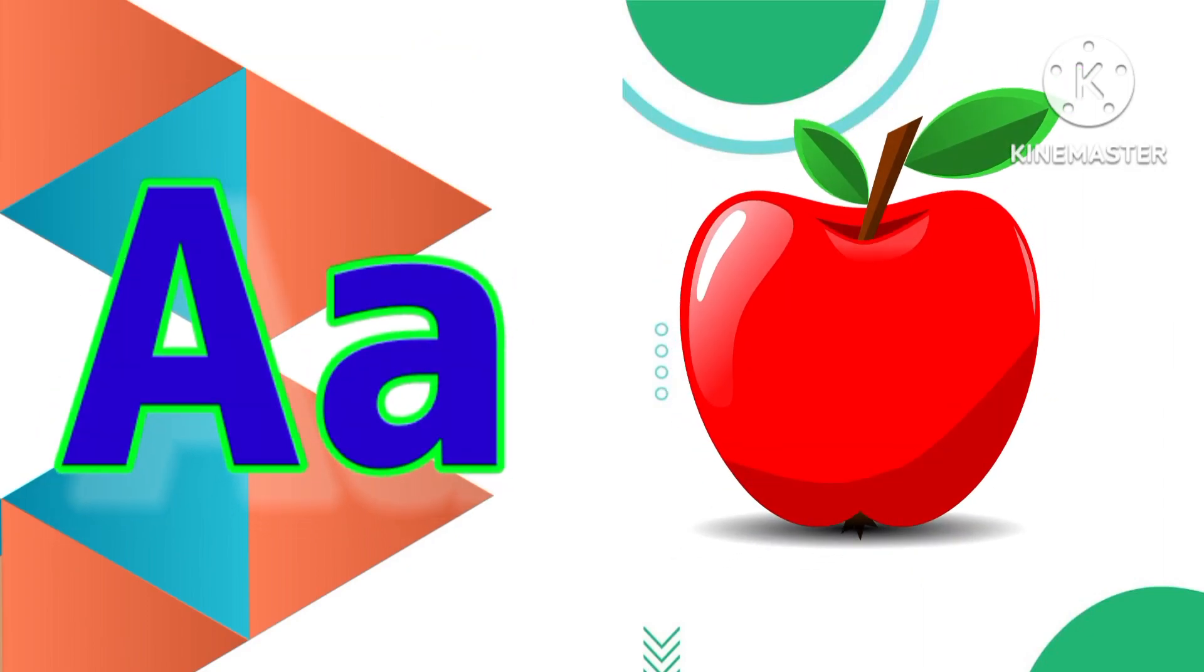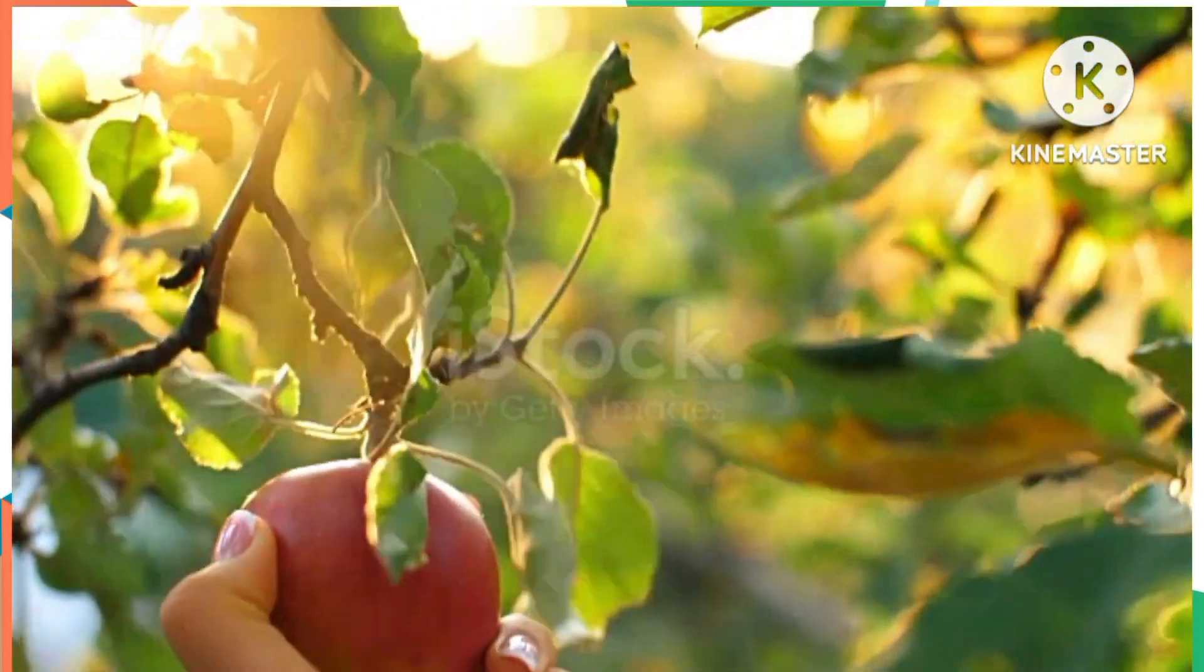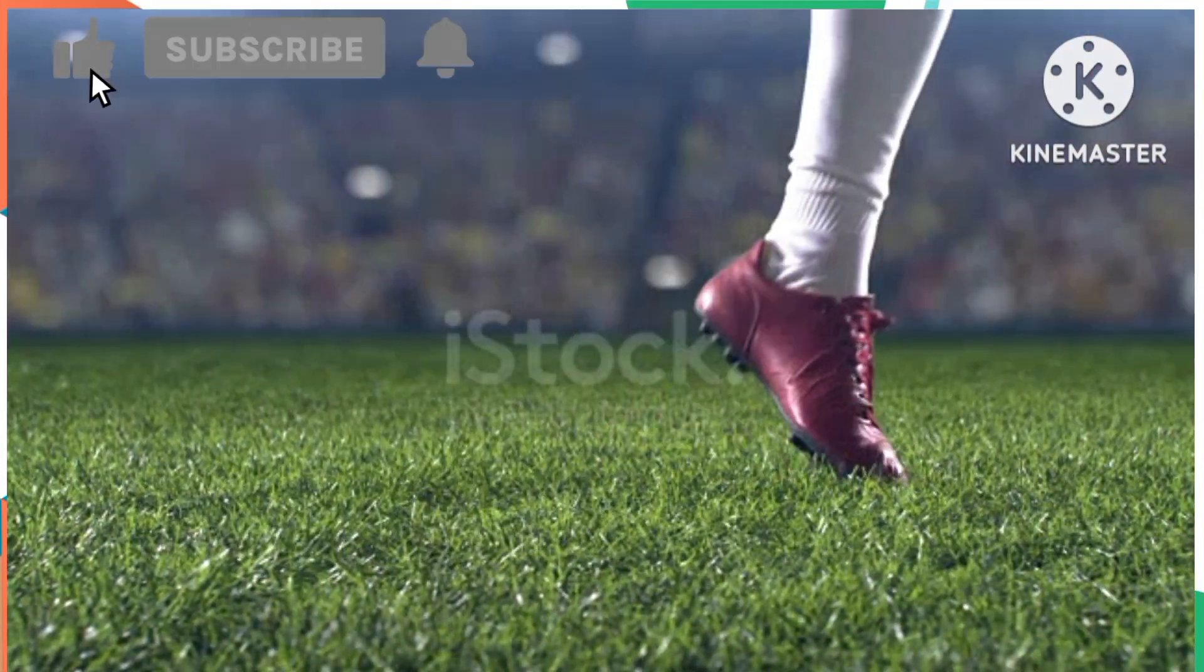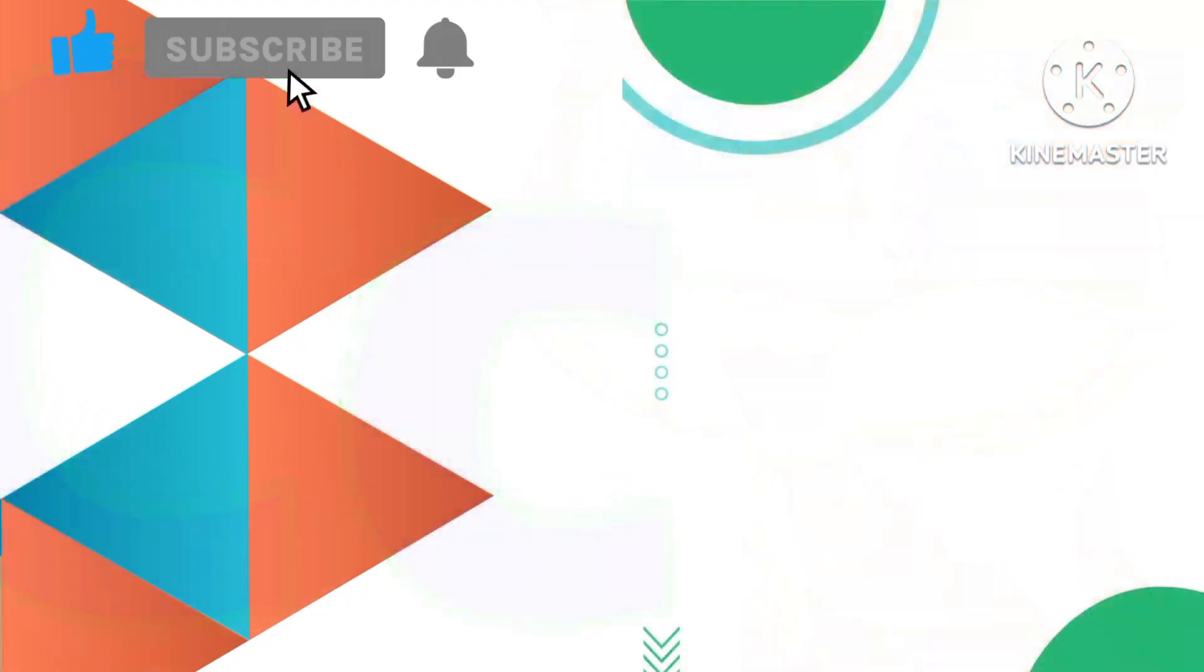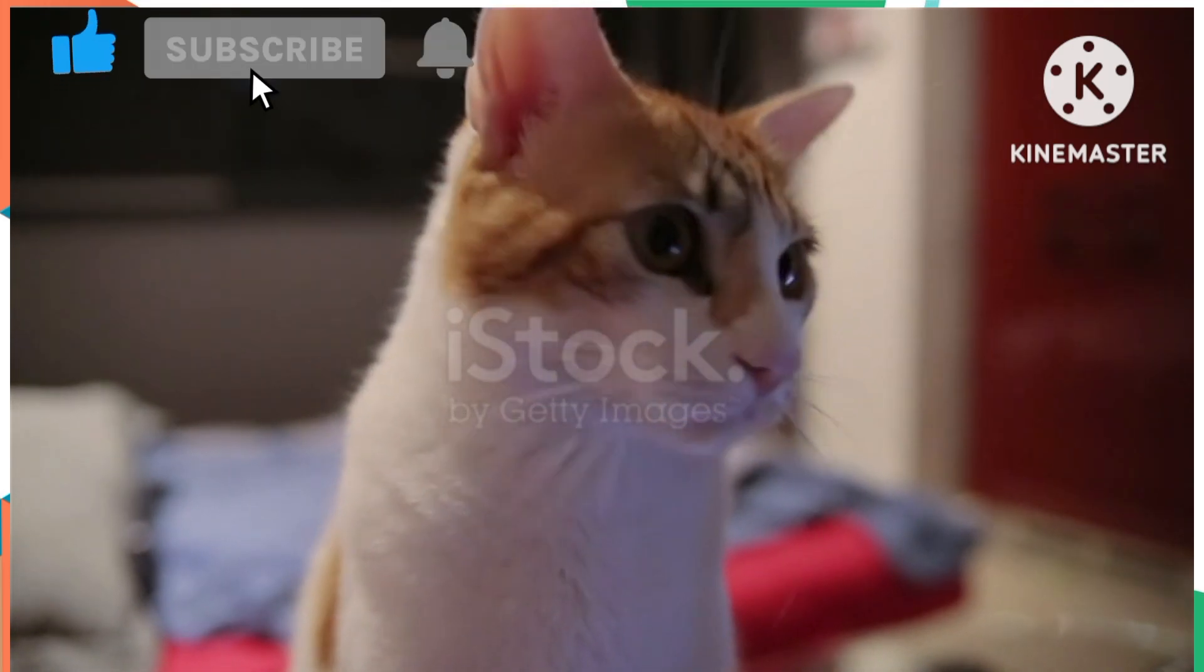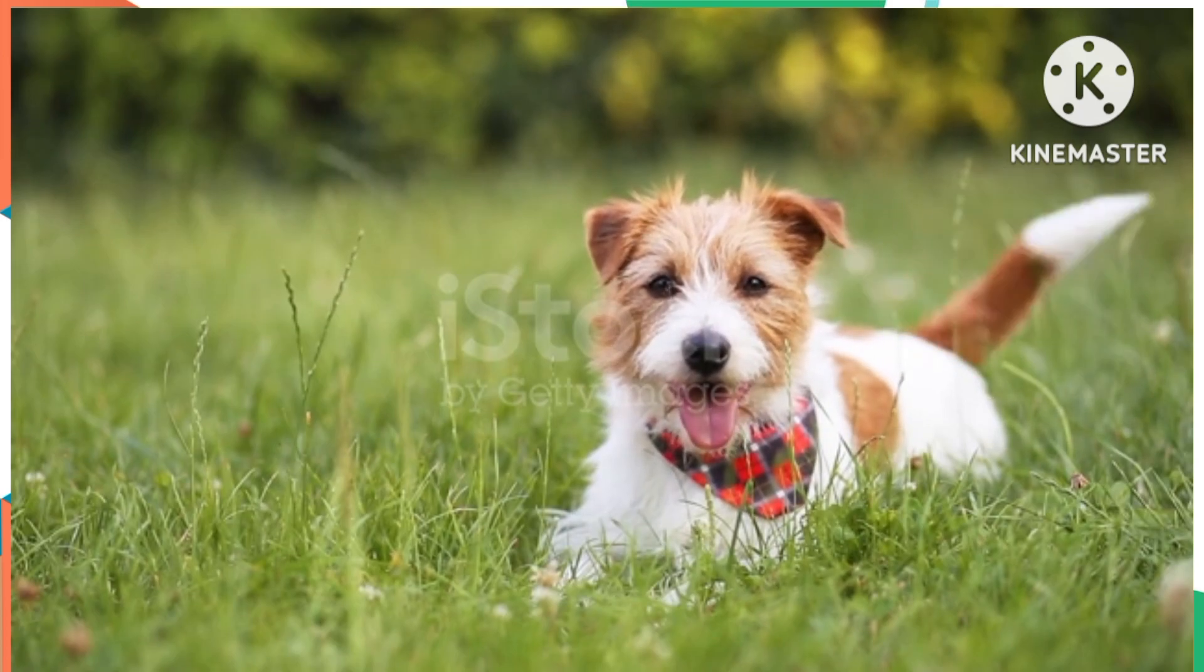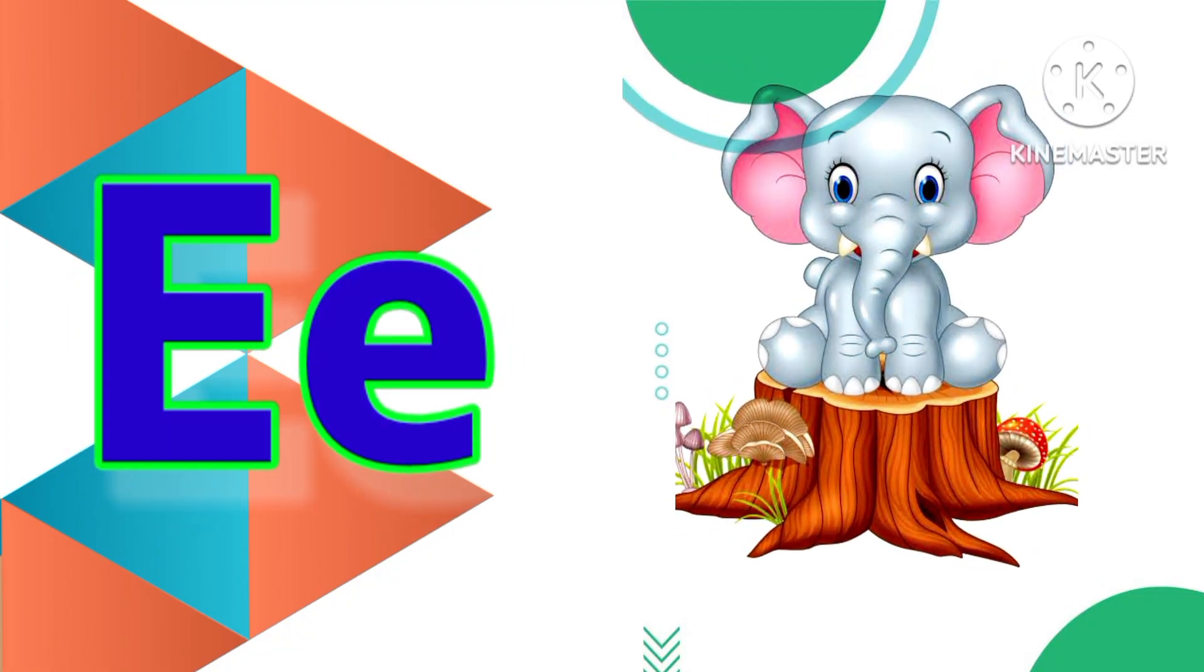A is for Apple. B is for Ball. C is for Cat. D is for Dog. E is for Elephant.